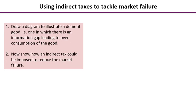Now a little task for you: draw a diagram illustrating a demerit good, or one in which there is a negative consumption externality. For those taking Edexcel Economics, think about a good where there is an information gap leading to over-consumption. Draw that diagram using the marginal social benefit and marginal social cost approach rather than simply demand and supply, then adapt your diagram to show how an indirect tax could be used to reduce the market failure.